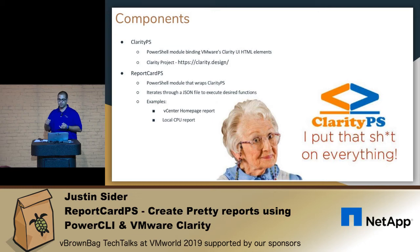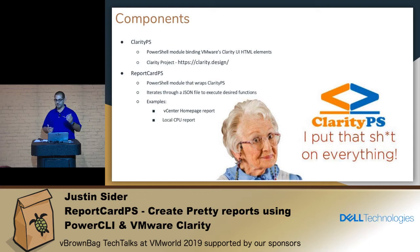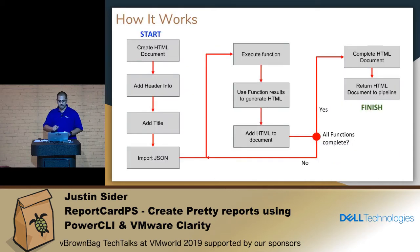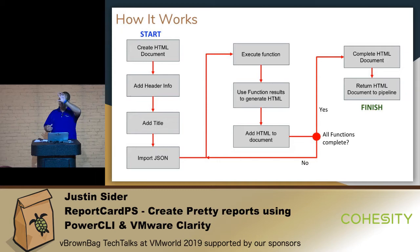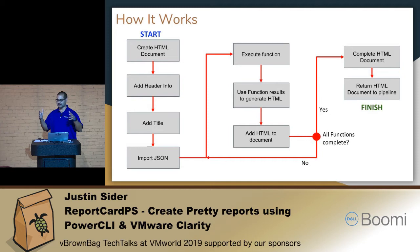Included in Report Card PS, we have the example vCenter homepage and the local CPU report — I did that for a PowerShell book that's coming out. So here's how it works. The big things to focus on are the loop in the middle. As you start the process, we're going to create the basis for your HTML document. If you've ever looked at an HTML document, there's a bunch of headers at the top, then you get into titles, and then we'll get into creating the card. All these things are contained within a flex container, and that's what allows the auto resizing of the boxes.